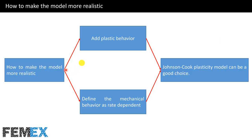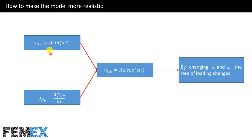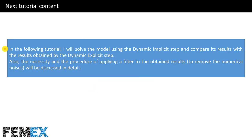To make the model more realistic, we can add plastic behavior or define the mechanical behavior as rate dependent — the Johnson-Cook plasticity model can be a good choice. The displacement of the tip in the Y direction is a sine function with speed equal to A·ω·cos(ωt), so by changing amplitude and frequency, the rate of loading changes.